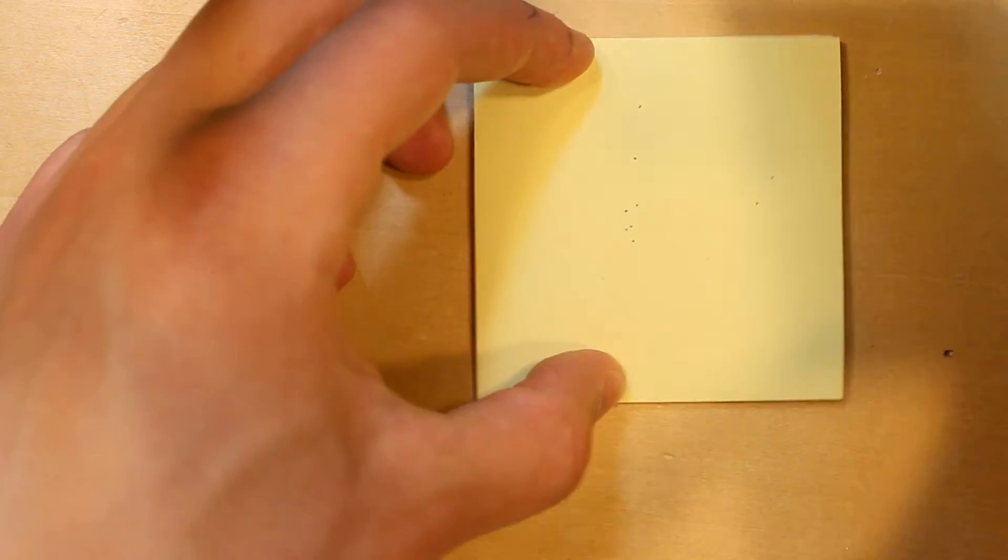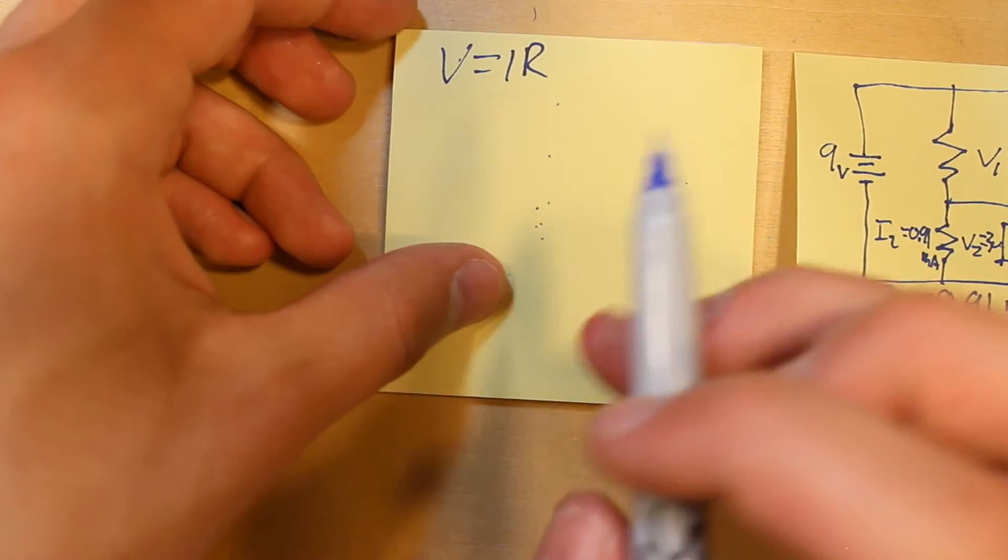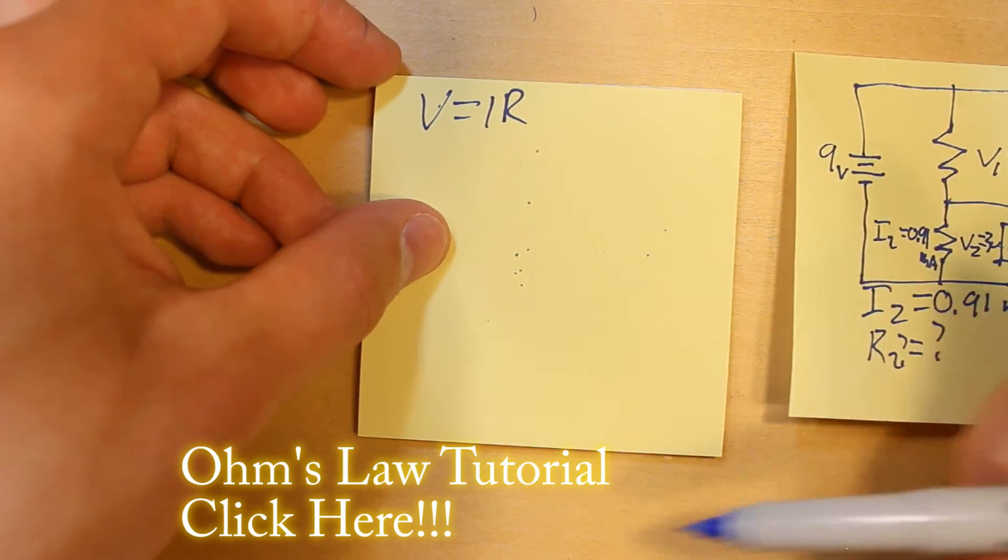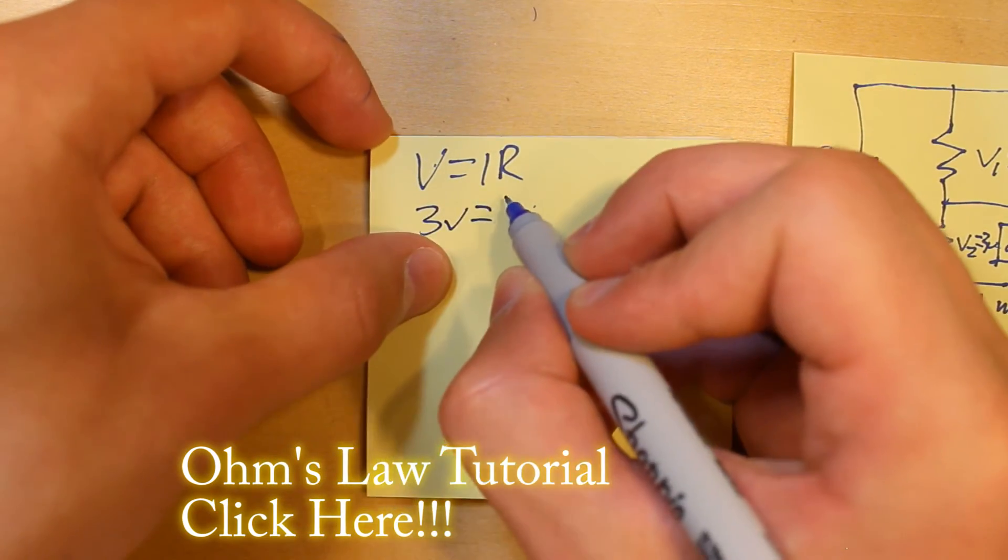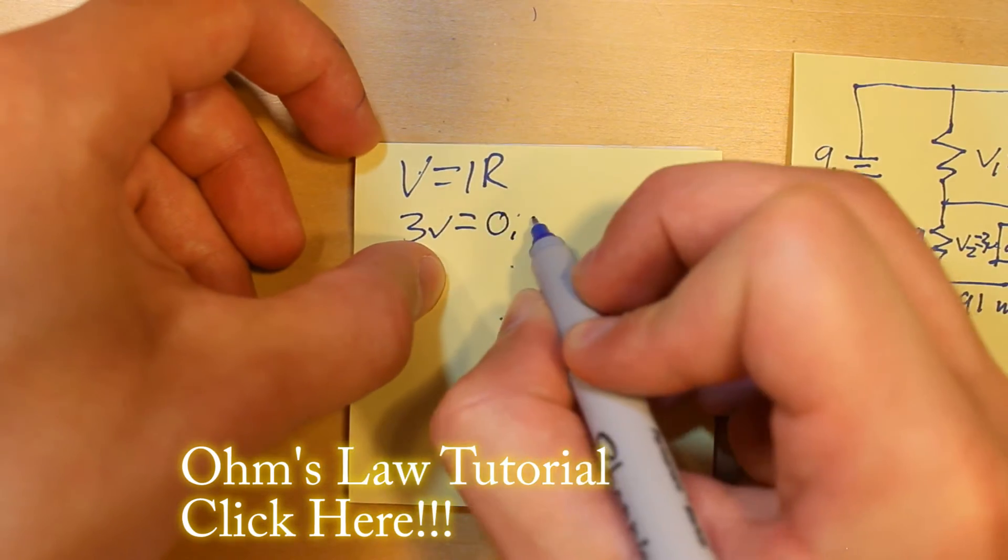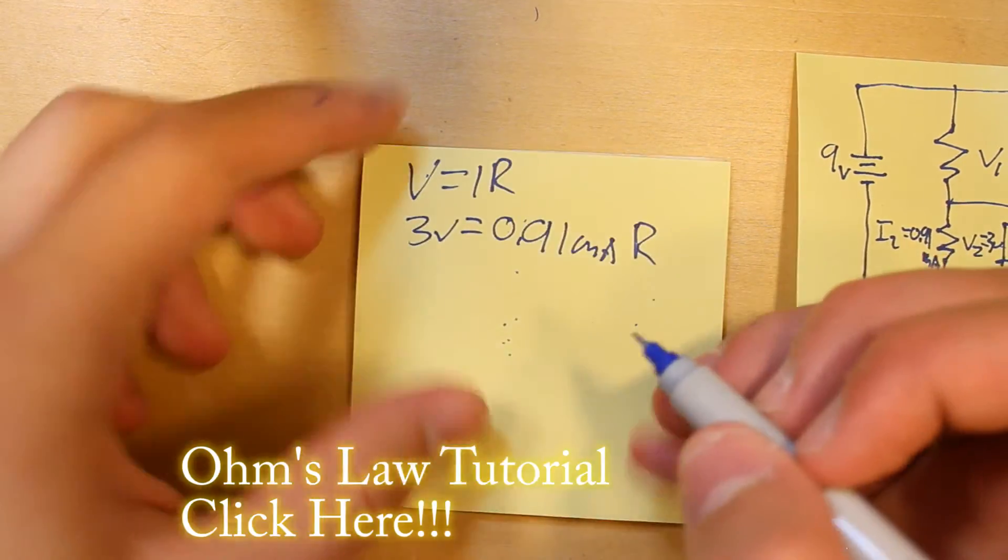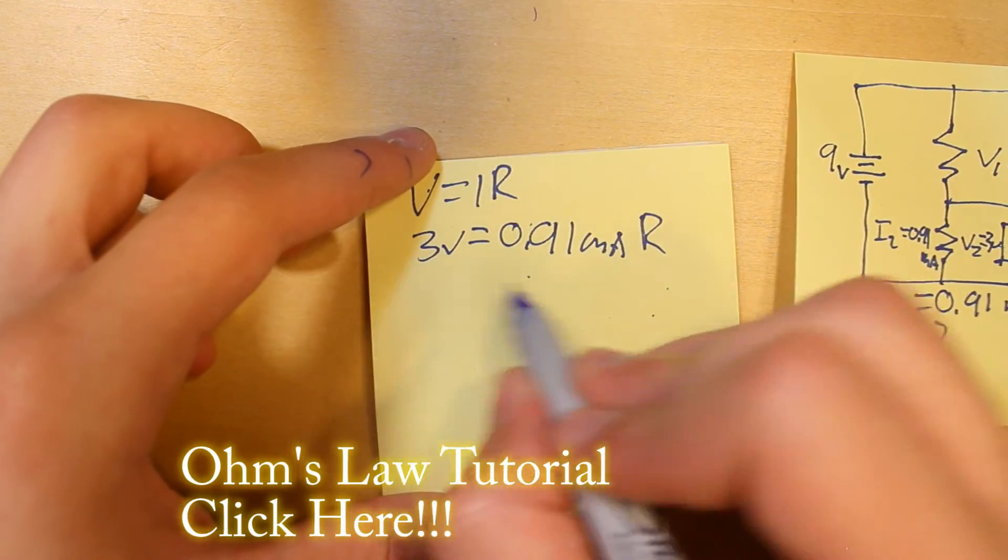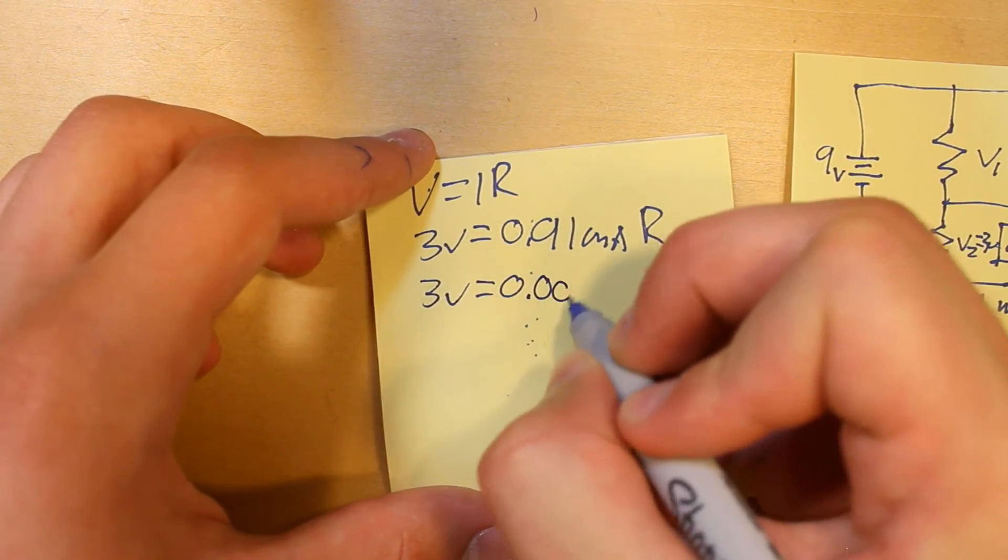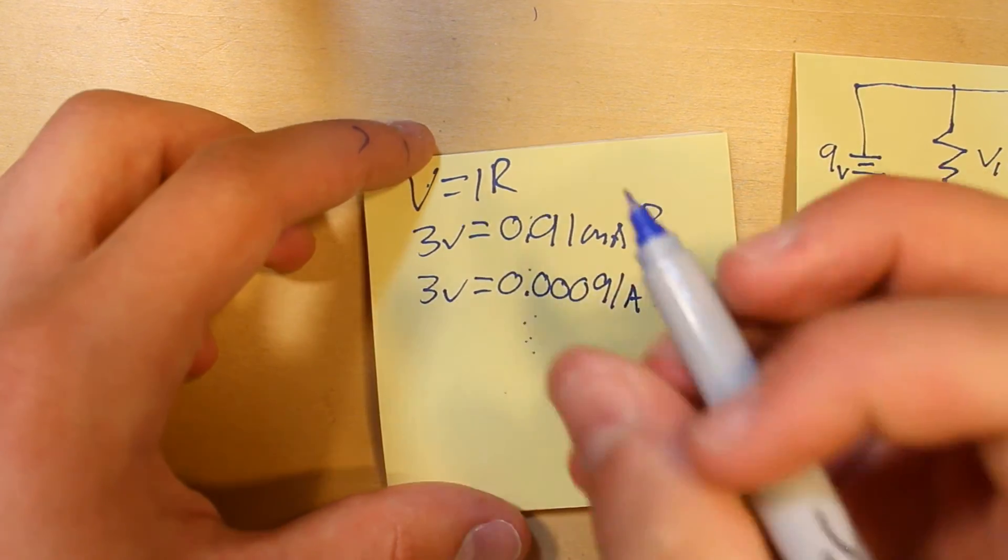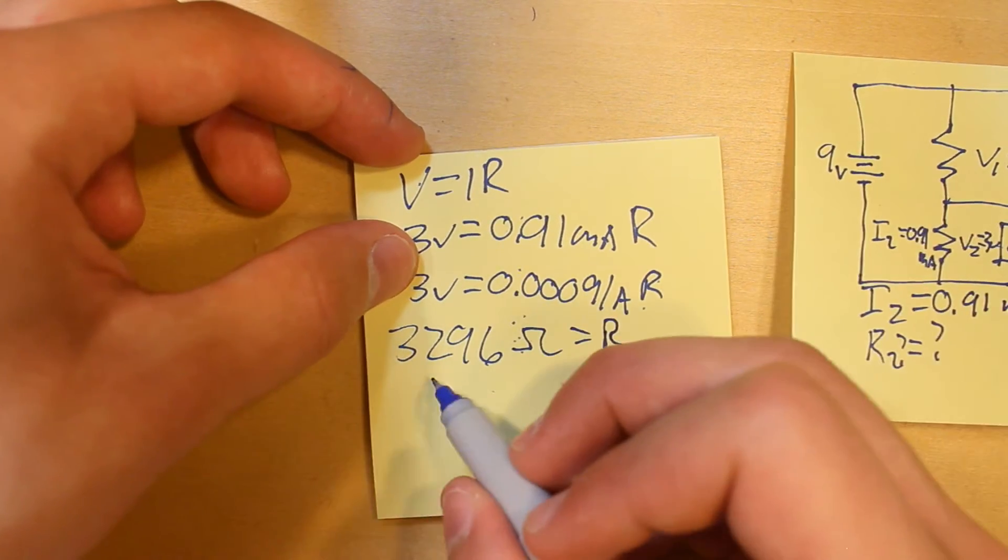Okay, so what's R2? Well, to figure that out, we're going to use Ohm's Law, so V equals IR. And I have a tutorial on Ohm's Law, which I'll just put a link to right there if you want to go see it. So, V equals IR, 3 volts equals the current, which is 0.91 milliamps, times R. We need to remember that Ohm's Law takes current in amps, not milliamps. So, 3 volts equals 0.00091 amps times R. Solve for R, we get 3296 ohms.